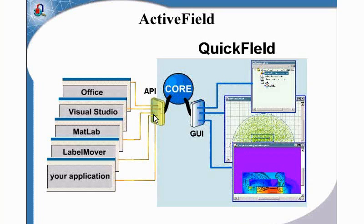I would like to show you one of them: the Label Mover. Label Mover is a small utility. It is good for parametric analysis. It can perform serial calculations, tolerance analysis, and optimization.